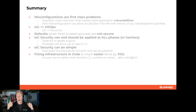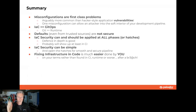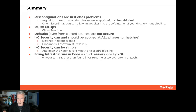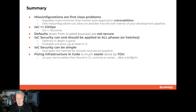Summary: Misconfiguration is a first-class problem — arguably more than old hacker-style application vulnerabilities. One little misconfiguration can cascade into bad things as an attacker dives into your development pipeline. Infrastructure as code equals GitOps; Git equals runtime security. Defaults, even from trusted sources, are not always secure. IaC security can and should be applied at all phases — defense in depth is good. The ROI sweet spot and easiest application for security is in CI. Security can be simple — fixing IaC is easy for everyone if we do it together.